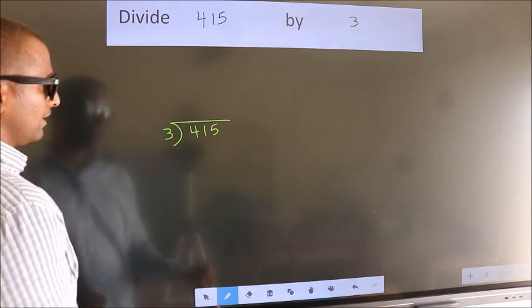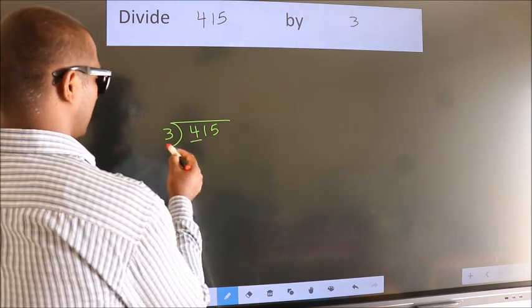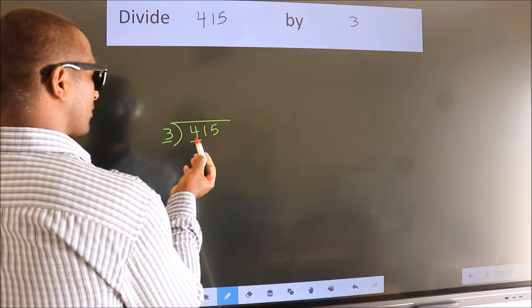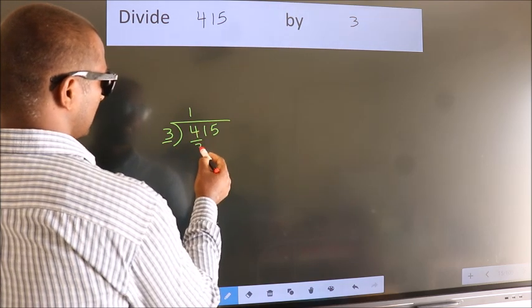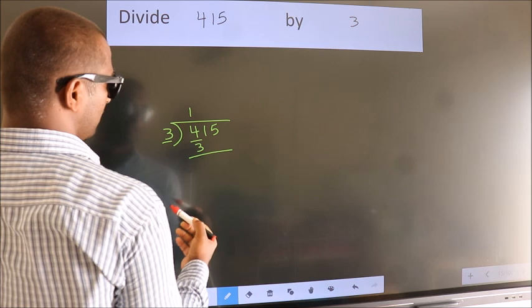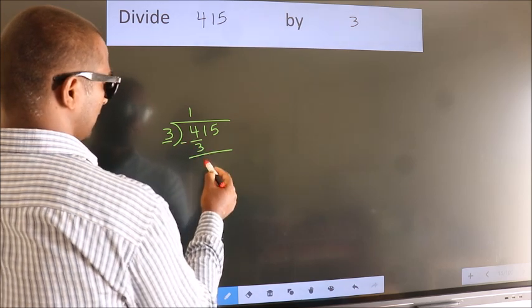Next. Here we have 4, here 3. A number close to 4 in 3 table is 3 times 1 is 3. Now we should subtract. We get 1.